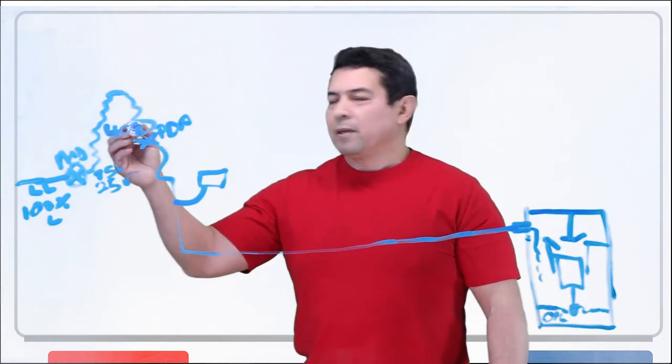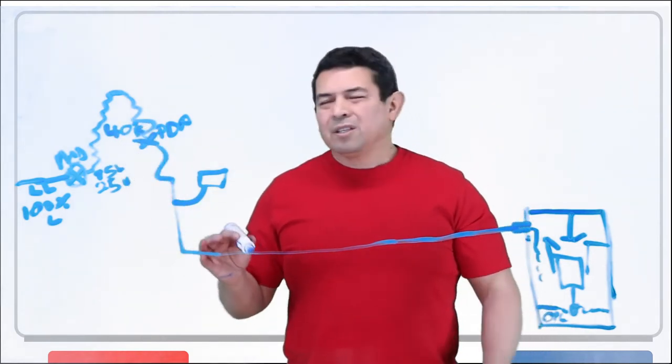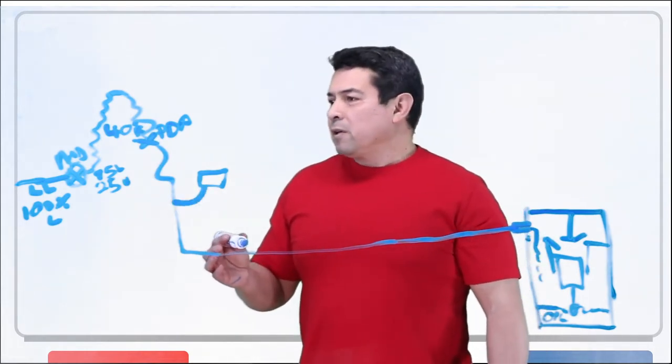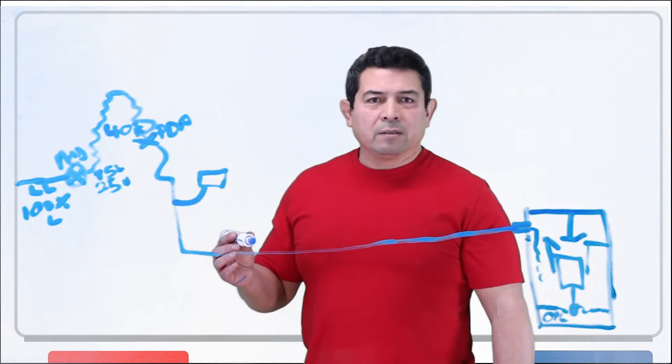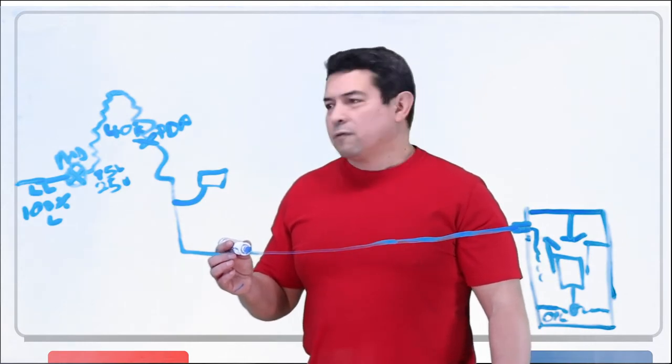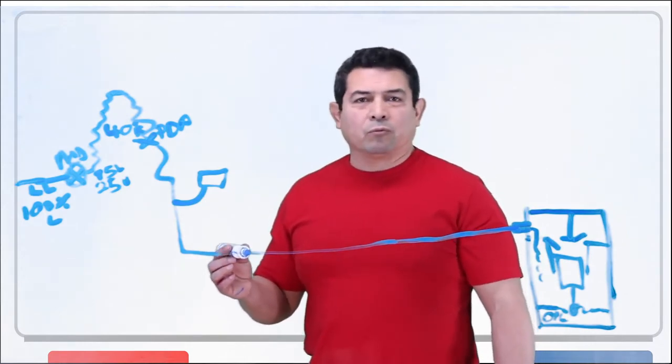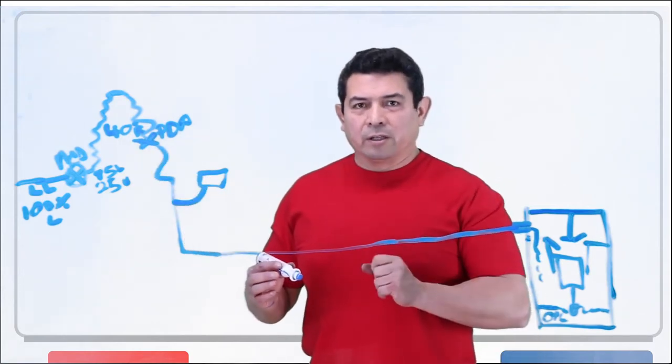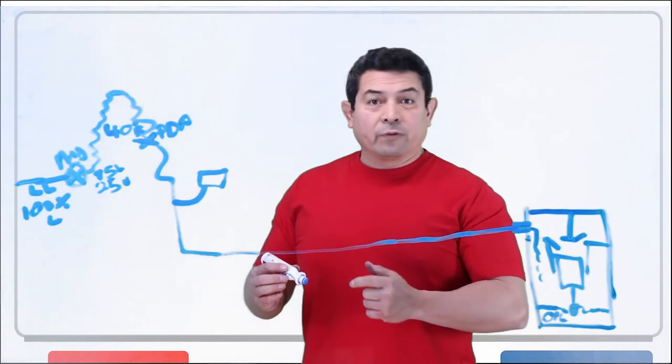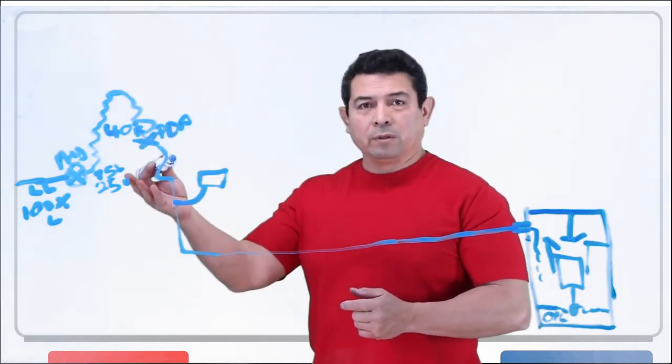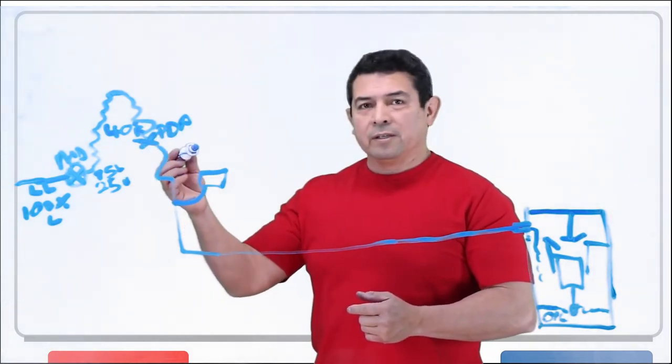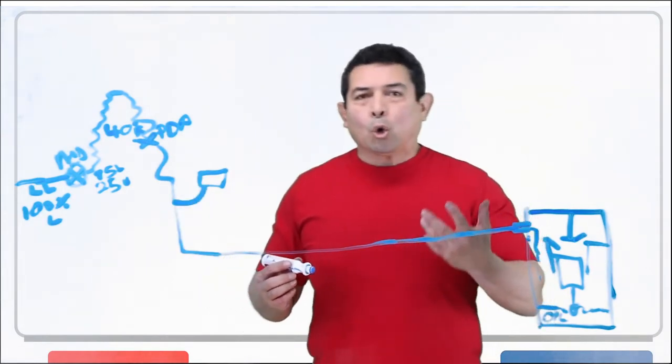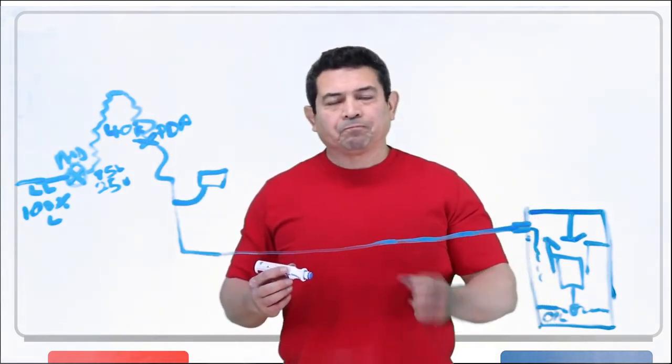Now if this is R22, typically we want 40. If this is, let's say, 407C, 40 degrees. If it's 410A, whichever, we still want that to be 40 degrees if it is an air conditioning system. If it is a refrigerator, of course, it's going to be lower. And if it is in a freezer, it's going to be much, much lower. It's going to be down to zero or below zero degrees.